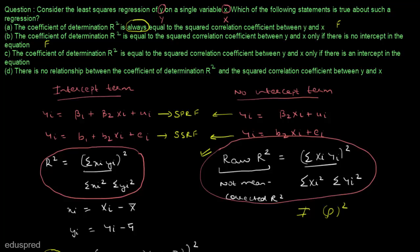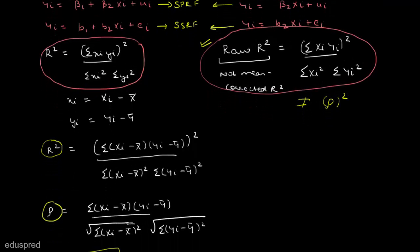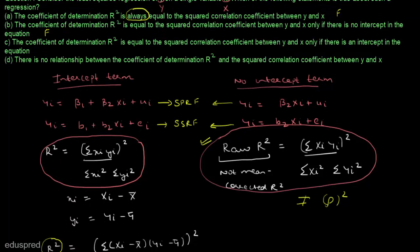Statement c says the coefficient of determination r-square is equal to the squared correlation coefficient between y and x only if there is an intercept in the equation. This is true, as I showed — when an intercept term is present, r-square equals the squared correlation between x and y. Statement d says there is no relationship between r-square and the squared correlation coefficient, which is false since they are equal when an intercept is present. So the correct answer is part c.